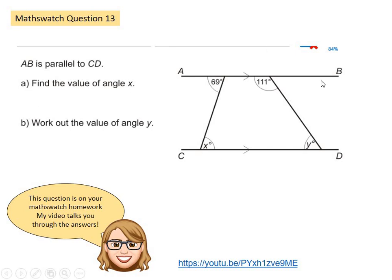Question 13. To find angle X you're looking to see if you can find any angle rules in parallel lines. I can see that there is a Z shape here so the angle at 69 degrees will also be equal to X so X is 69 degrees.